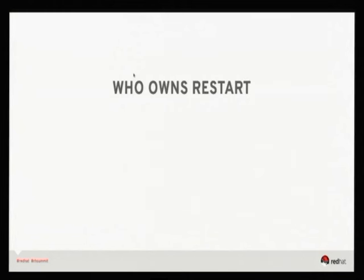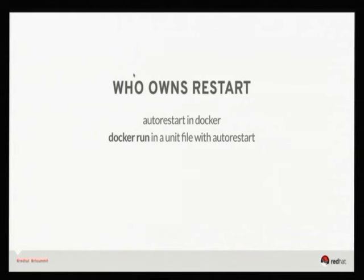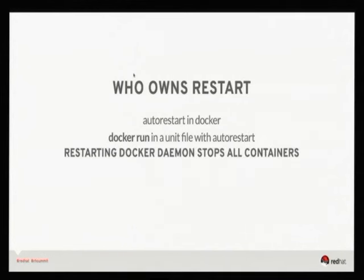Say you want to put an Apache service inside a Docker container and run it in a unit file — who owns the restart? If the application goes down, you can do auto-restart in Docker or put your Docker run in a unit file with auto-restart. The problem is: restarting the Docker daemon stops all containers. If Docker goes down and kills all your containers, systemd won't know about it because it only sees the client process.